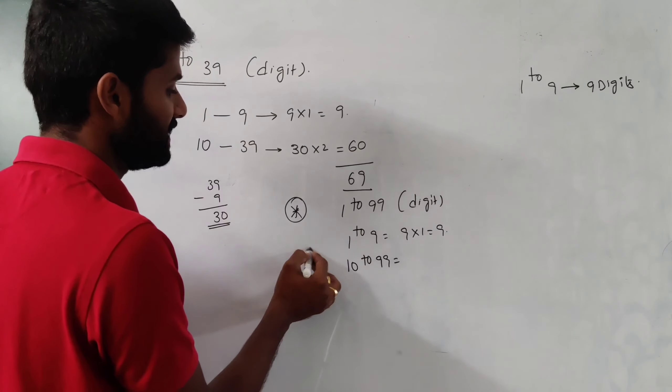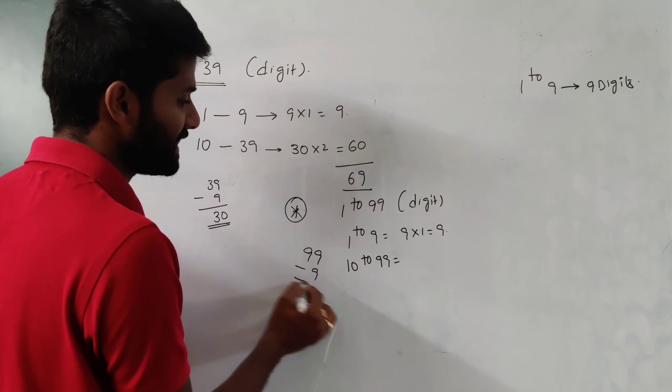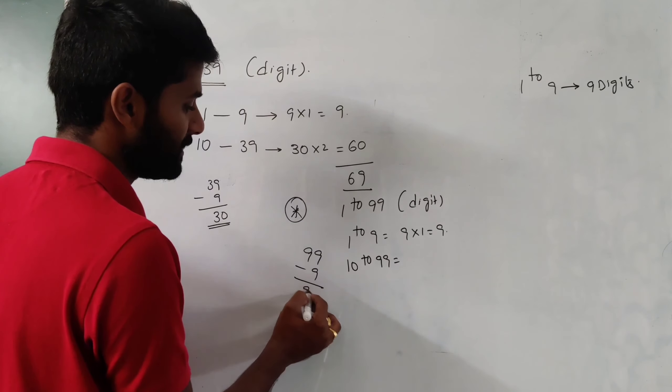Question 1: From 1 to 35, find the number of digits. First, focus on 1 to 9 — we have nine numbers, each using one digit. So nine into one gives us a total of nine digits used to form the numbers 1 to 9.